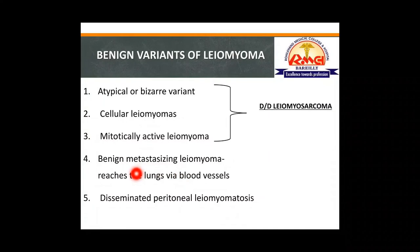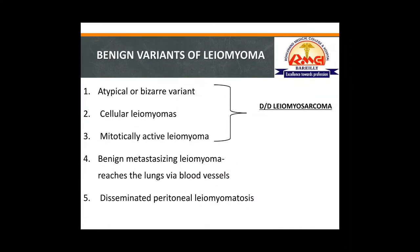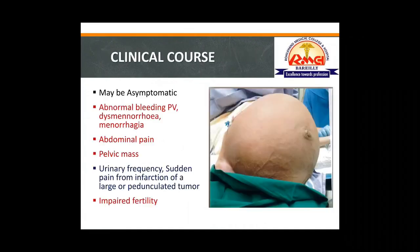Benign metastasizing leiomyoma occurs when leiomyoma reaches blood vessels and travels to distant organs like the lungs, but it remains a benign condition with a mechanism different from malignant neoplasms. Disseminated peritoneal leiomyomatosis features multiple leiomyomatous nodules scattered throughout the peritoneal cavity, considered to arise from metaplasia of the epithelium at those sites.